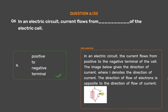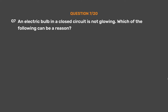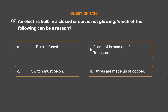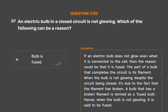Question number 7. An electric bulb in a closed circuit is not glowing. Which of the following can be a reason? Option A: Bulb is fused. Option B: Filament is made up of tungsten. Option C: Switch must be on. Option D: Wires are made up of copper. The correct answer is Option A, Bulb is fused. If an electric bulb does not glow even when it is connected to the cell, the reason could be that it is fused. The part of a bulb that completes the circuit is its filament. When the bulb is not glowing despite the circuit being closed, it is due to the fact that the filament has broken. A bulb that has a broken filament is termed as a fused bulb.